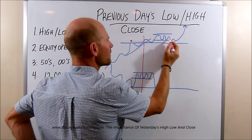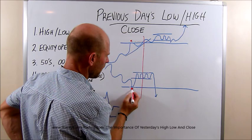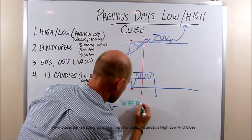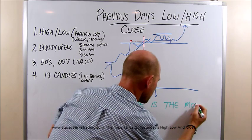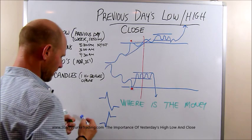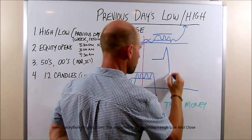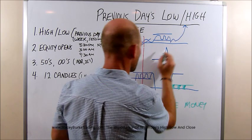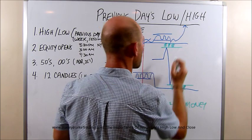The other scenario I want you to consider brings us back to the original question I ask myself every single session: where is the money? What's important about these previous day highs and lows is that in a normal situation, these areas contain money. These are stops, take profit targets, entry orders, stop losses — whatever you want to call them. These are large areas.